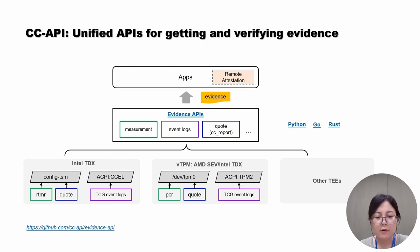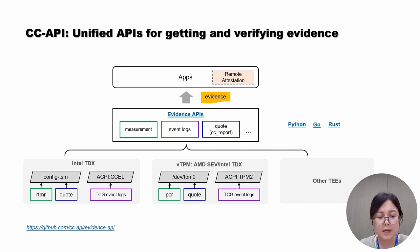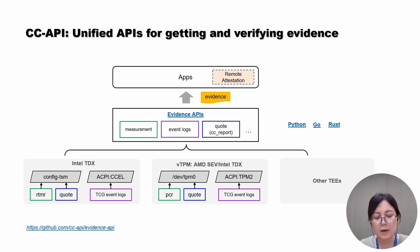Since the Evidence APIs abstract the differences of diverse TEEs, workload owners don't need to deal with different interfaces from multiple TEE vendors — it's transparent to high-level workloads. High-level applications only need to interact with the unified Evidence APIs to get all the evidence required. Next, I will hand it over to my colleague Xiao Cheng to introduce how these APIs address the challenge of container measurement, as well as applicable scenarios and use cases.